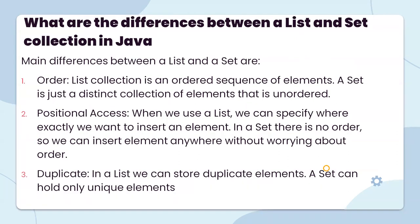What are the differences between List and Set? The main difference is order. List collection is an ordered sequence of elements with positional access. Set is just a distinct collection of elements — there is no order. When we use List we can specify exactly where we want to insert an element; in Set there is no order so we can insert elements anywhere without worrying about order. In List we can store duplicates; Set can hold only unique elements.